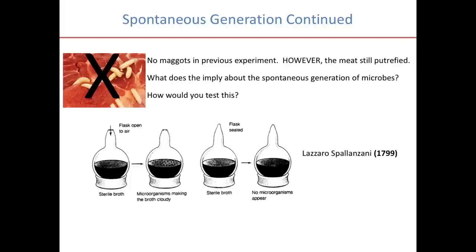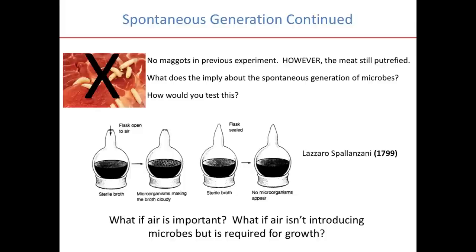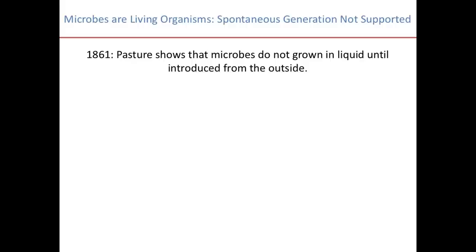Think about what the problem might be with this experiment. If we were asking this question nowadays, it would be suggestive that spontaneous generation is not a means by which microbes arise. However, it doesn't prove it. One of the reasons is maybe air is important — what if air isn't introducing the microbes into the broth, but is actually required for the growth of the organisms? Louis Pasteur in 1861 addressed this question with a slightly modified experimental setup.